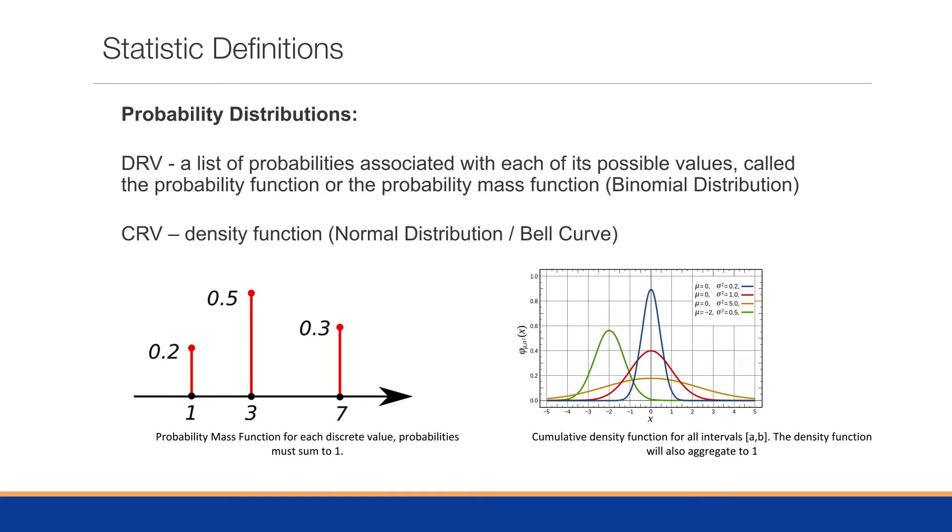A recap of some statistical definitions: we're going to talk about probability distributions. The probability distribution for a discrete random variable is a list of probabilities associated with each of its possible values, called the probability function or the probability mass function, something like a binomial distribution.